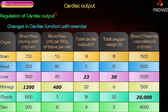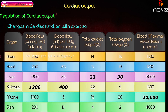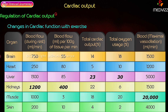Blood flow to the brain during rest is 750 ml per minute, which is 55 ml per 100 grams of tissue per minute. The total cardiac output to the brain is approximately 14 to 15 percent, and total oxygen utilization is 18 percent. With maximum vasodilation, blood flow to the brain is approximately 1500 ml per minute.